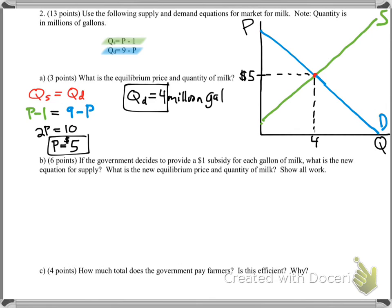If the government decides to provide a $1 subsidy for each gallon of milk, what is the new equation for supply? What is the new equilibrium price? So if you are given a subsidy, a subsidy pretty much is the government paying whoever money to produce more. So if I'm giving you a dollar for every orange you produce out of your orange garden or orange tree or whatever you have going in your backyard, for example, you're going to want to produce more oranges, right? Because you're getting paid to produce more. So what this does in the market is it shifts the supply to the right, or increases supply.